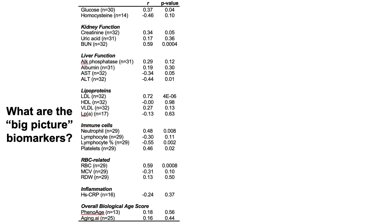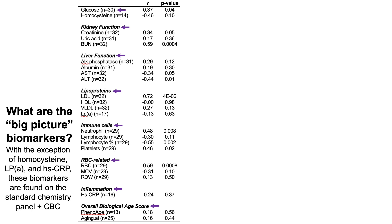There are 23 markers that I regularly track, blood testing six times a year or more. They include glucose as a marker of insulin resistance/sensitivity, three markers of kidney function (creatinine, uric acid, and blood urea nitrogen/BUN), four markers of liver function, lipoproteins, immune cells, red blood cell related markers, inflammation including high-sensitivity C-reactive protein, and the overall biological age score as computed by Levine's PhenoAge and Aging.ai. With the exception of homocysteine, lipoprotein A, and C-reactive protein, these biomarkers are found on the standard chemistry panel plus CBC — a less than $35 test.